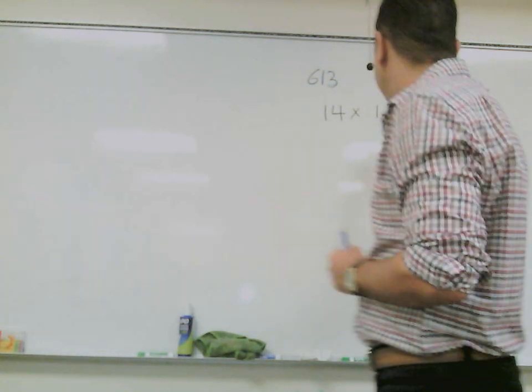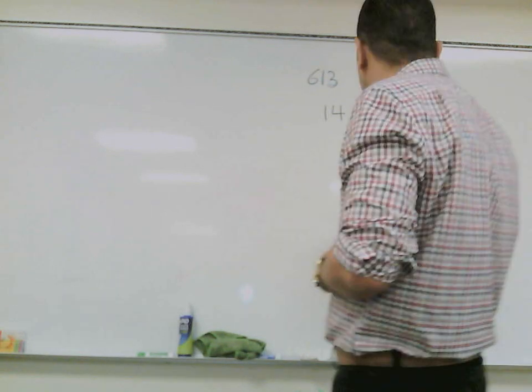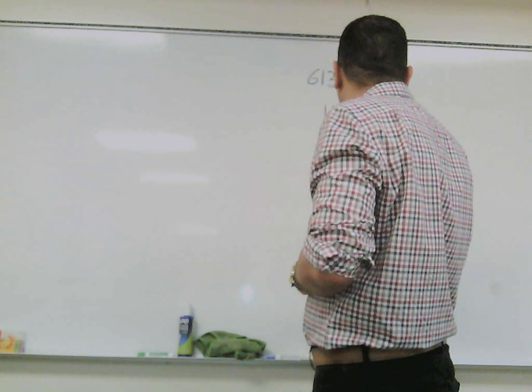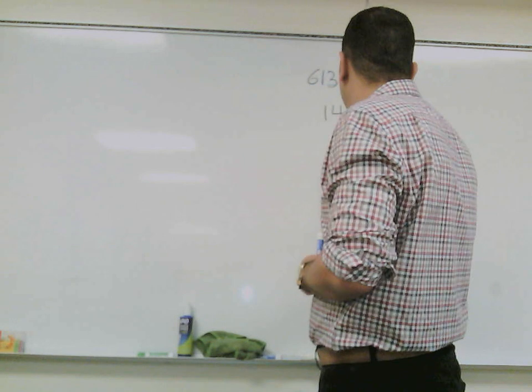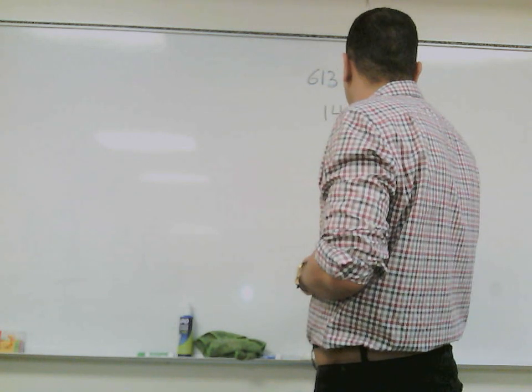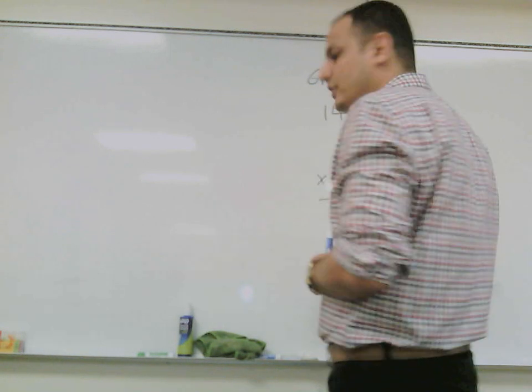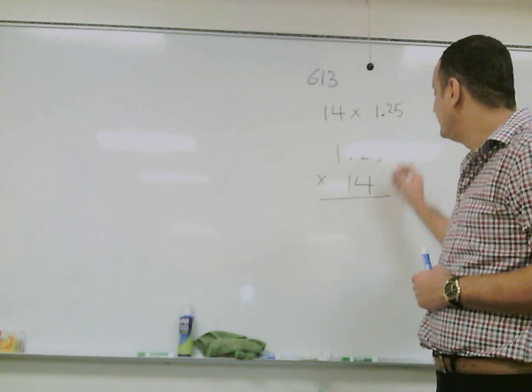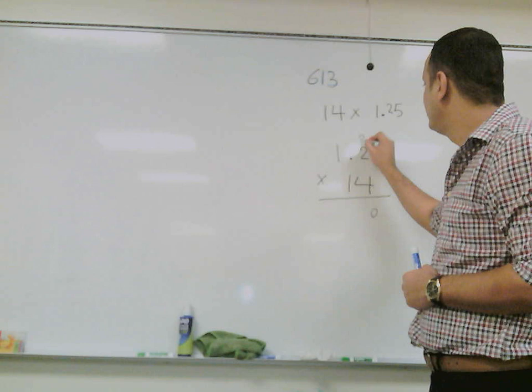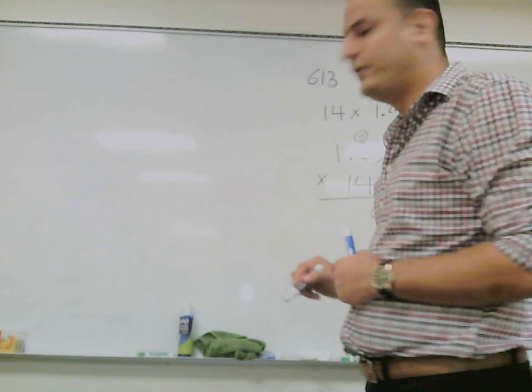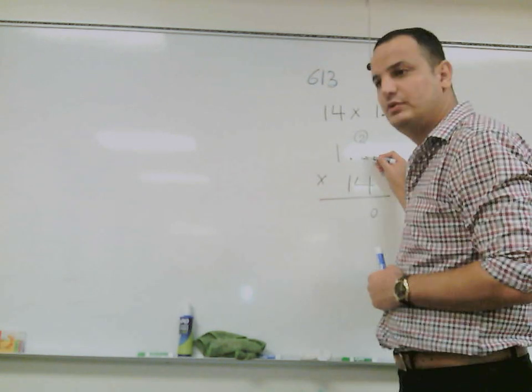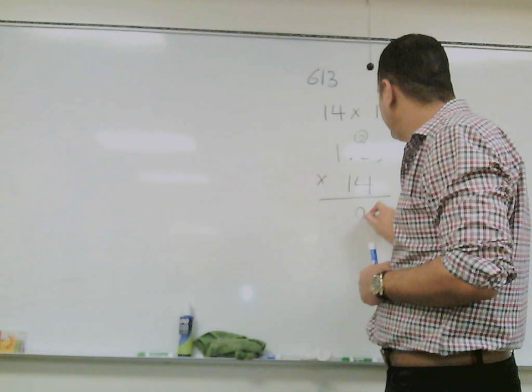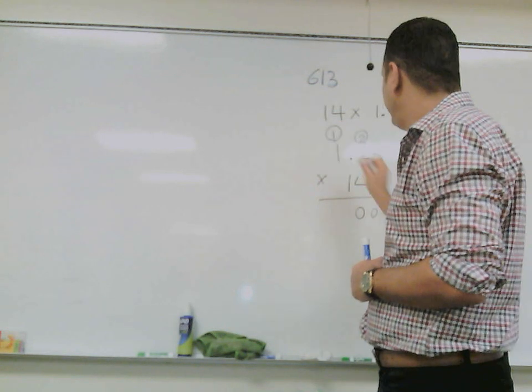So let's multiply that, 14 by 1.25. 4 times 5 is 20. 4 times 2, 8 plus 2, 10. 4 times 1, 4 plus 1, 5.